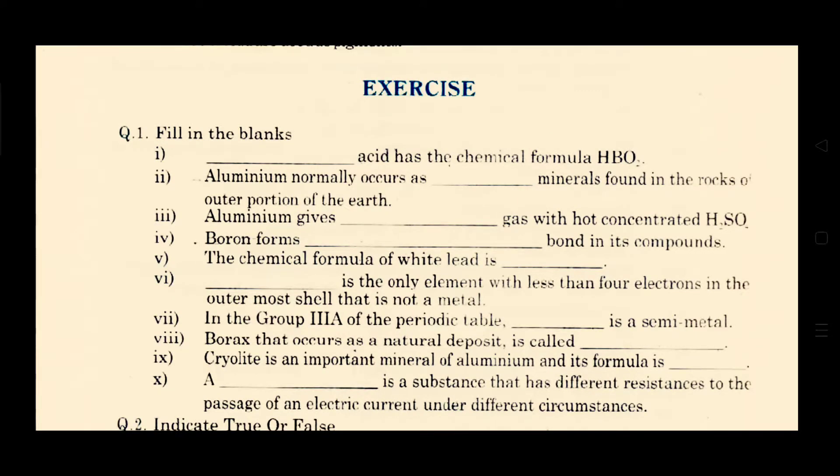And the next fill in the blank is boron forms dash bonds in its compounds. As we know, boron usually forms three bonds in its compounds because there are three outermost electrons in the boron and the oxidation state of boron is usually plus three. So we can say that boron usually forms three bonds in its compounds.